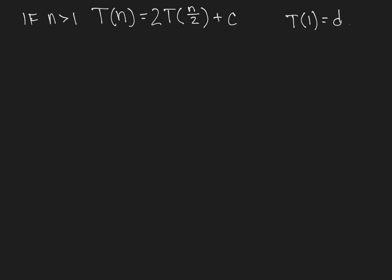Now we'll often make a simplifying assumption, which is that n is an appropriate power, in this case a power of 2, so that n over 2 will always be an integer.